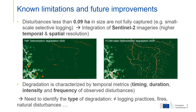Here I want to point out two main known limitations. The first is that disturbances less than 0.09 hectares in size are not fully captured — for example, small-scale selective logging. Integration of satellite imagery with higher temporal and spatial resolution will be key for addressing this. You can see this example in Central Africa: TMF identifies the main logging roads and decks, but the FCDM approach can capture finer events such as canopy opening, logging gaps, and smaller roads.